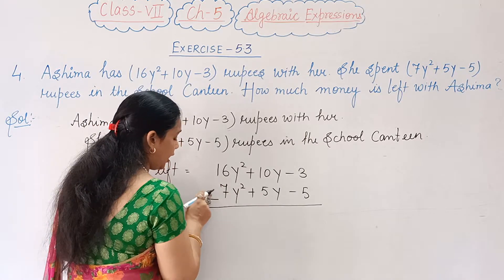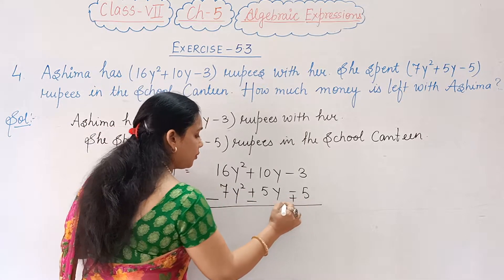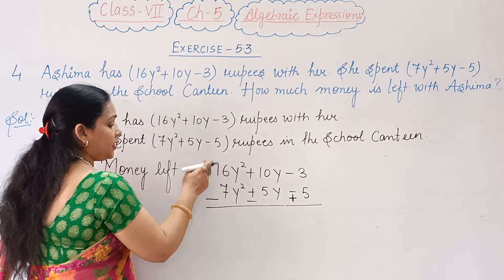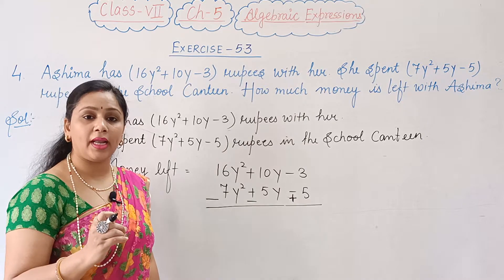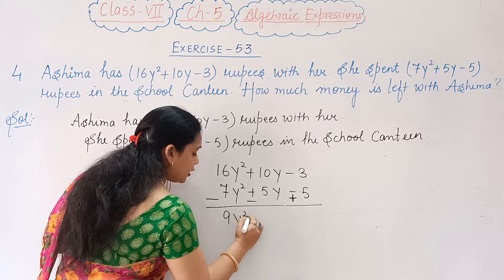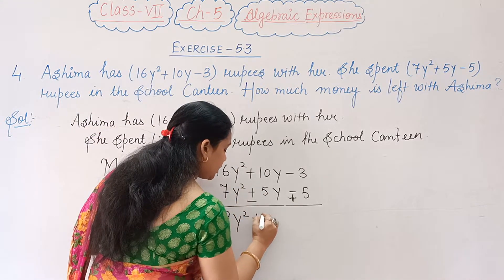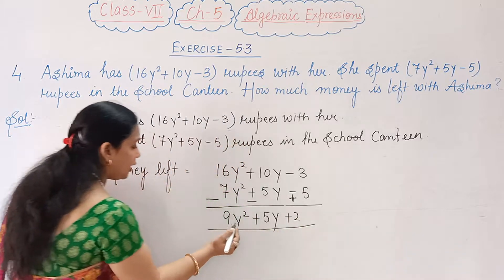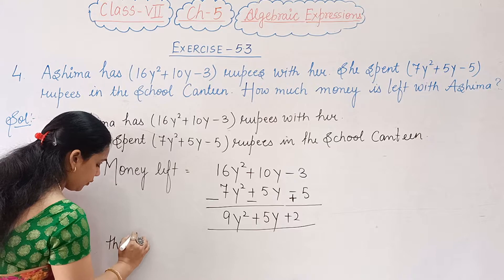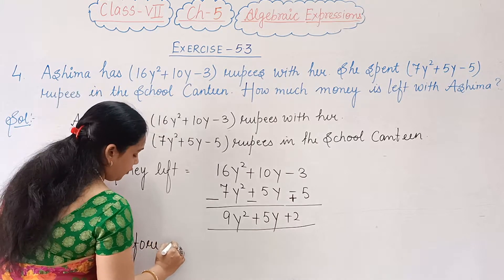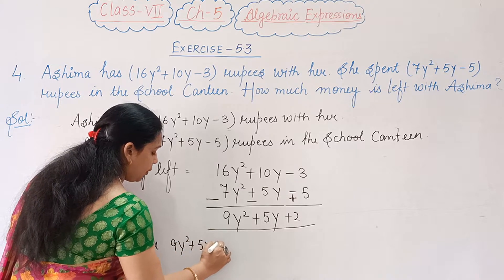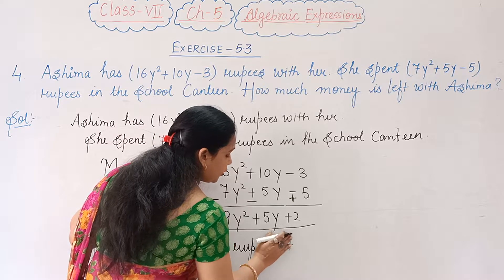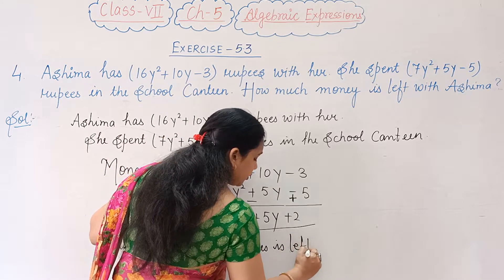We will change all the signs. Minus becomes plus, plus becomes minus. So: plus 10y minus 5y gives plus 5y, and minus 3 minus minus 5 gives plus 2. After combining like terms we get the result.